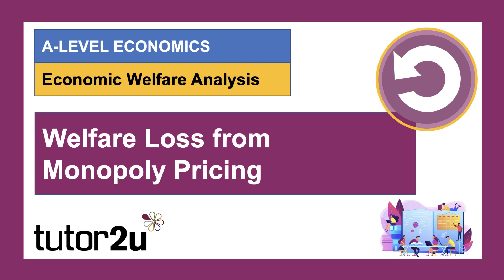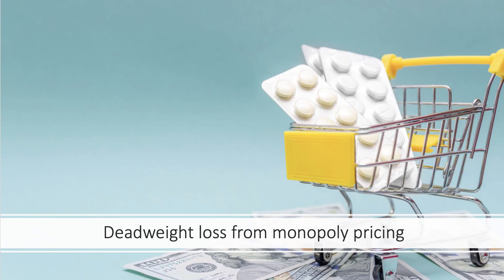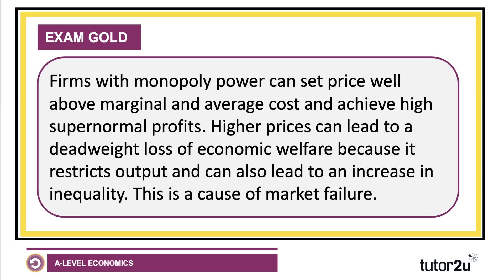Welcome to another video looking at welfare loss. This time we're going to look at monopoly pricing and the extent to which monopoly as a market structure can lead to a loss of economic welfare. Firms with a significant amount of market power or monopoly power have the ability to set prices well above both marginal and average cost, and therefore they can achieve high levels of supernormal profit. They then use barriers to entry as a means of maintaining those supernormal profits in the long run.